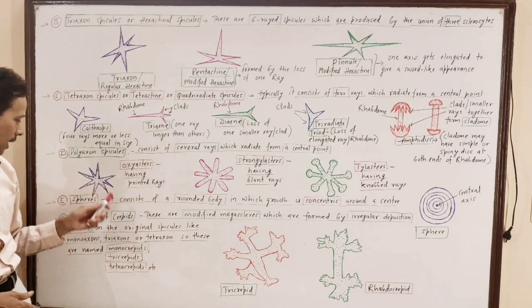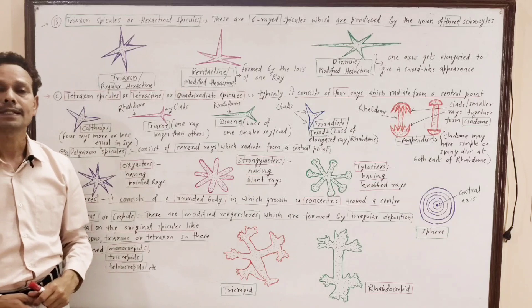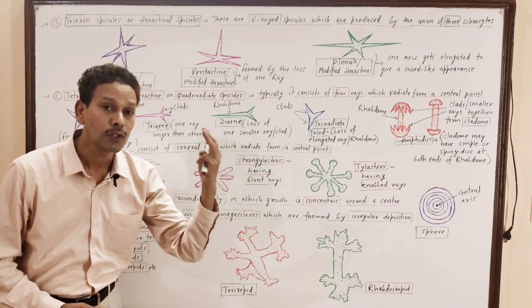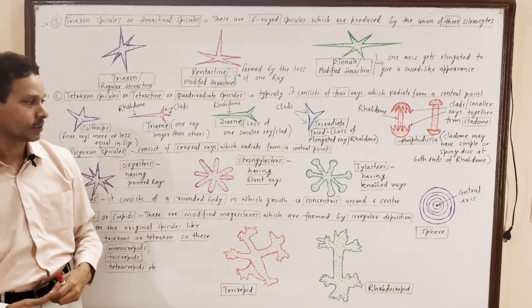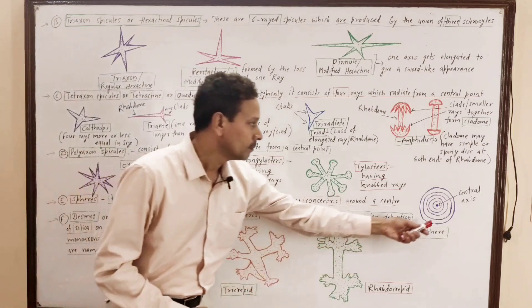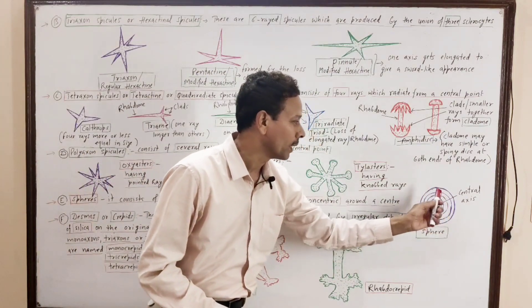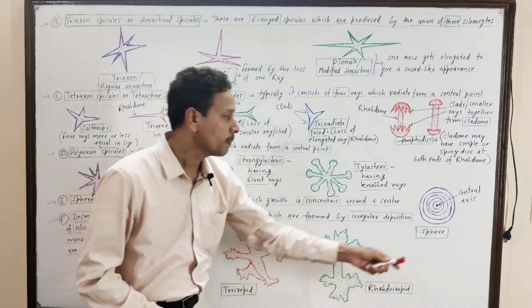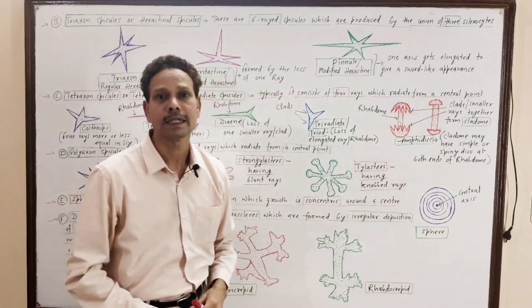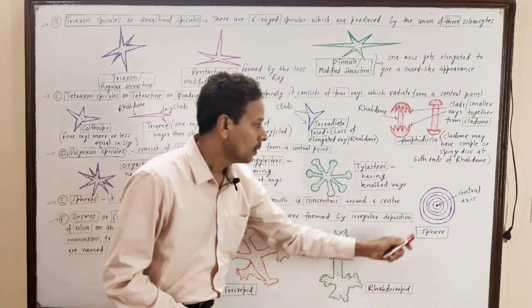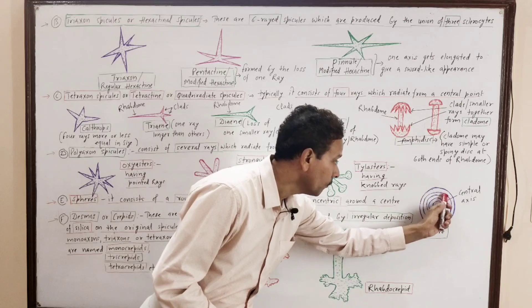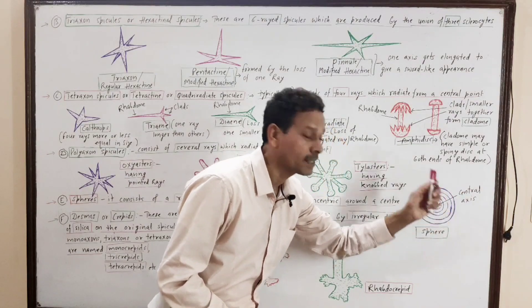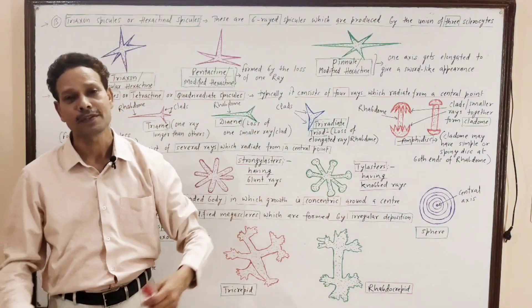The next type is spheres. As the name indicates, these are almost rounded spicules. In the diagram, the shape is spherical. The growth occurs in the form of concentric rings over the central axis. These are spheres.